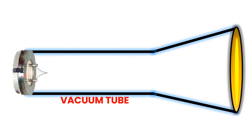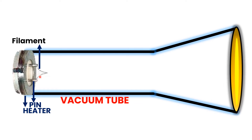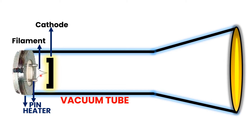The cathode ray tube has a heater inside it, and the heater has two connection pins. These pins of the heater are connected with a filament which is made up of tungsten. The cathode ray tube also has two electrodes. One of the electrodes is known as the cathode. The cathode is an electrode which produces or liberates electrons from itself. The tungsten filament in a cathode ray tube works on thermionic emission, and the pins of the heater are connected with a potential source or battery.